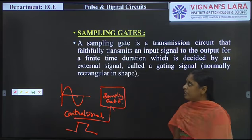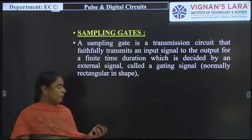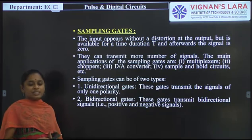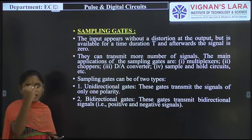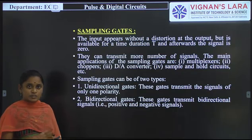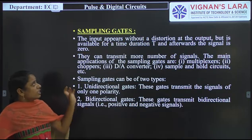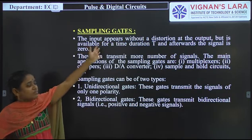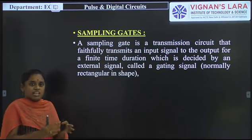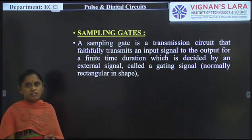These sampling gates are also known as linear gates, because whatever the input signal we apply, that will be produced at the output side without any distortion. That is why sampling gates are also known as transmission gates as well as linear gates — the input appears without distortion at the output, but only for a time duration t, which is decided by the pulse width.